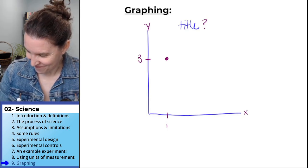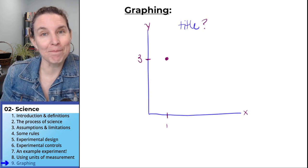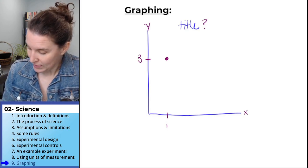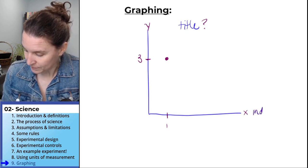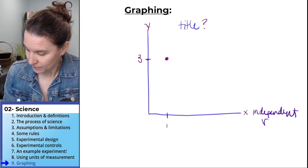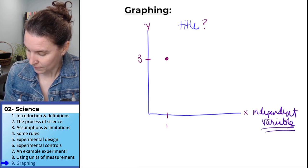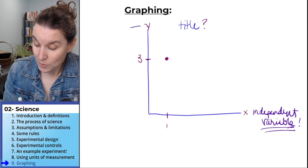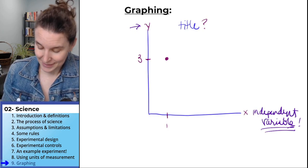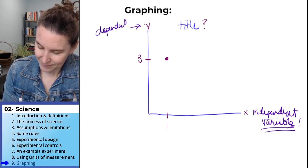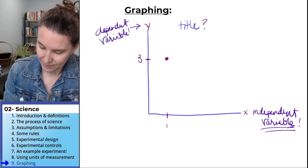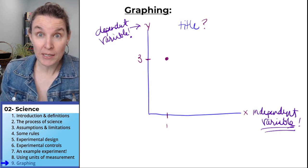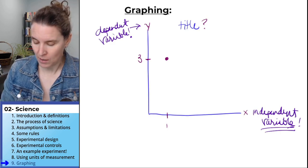One hundred percent of the time, on the x-axis goes your independent variable. Always put your independent variable on the x-axis, which means what do you suppose is going to go on the y-axis? Your dependent variable goes on the y-axis. Independent on the x, dependent on the y.